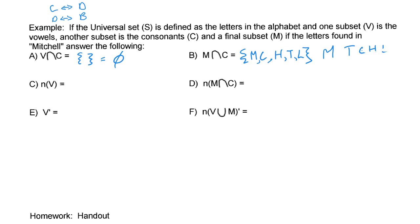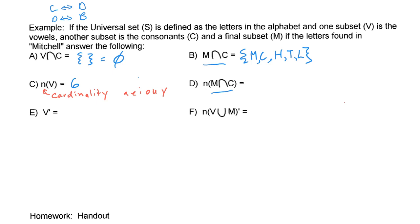Now, when we want to find N — the cardinality, the number of elements — in N of the vowels: the vowels are A, E, I, O, U, and sometimes Y, so I'll say Y. Counting: 1, 2, 3, 4, 5, 6. The number of vowels is 6. Now let's find the number of elements in the intersection we just had — that cardinality is 5.